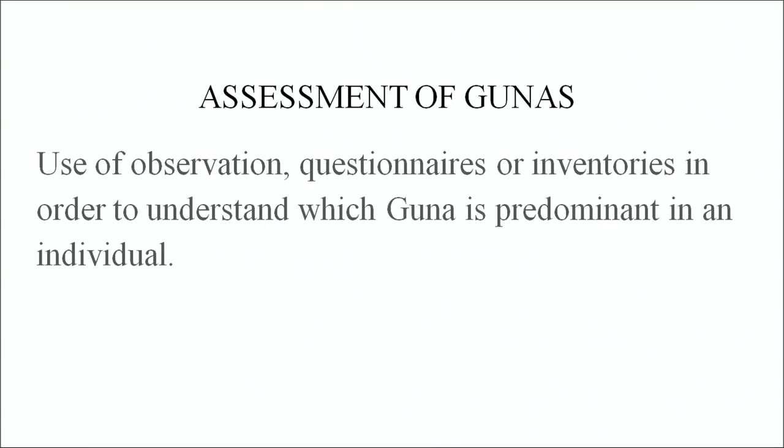In the Indian perspective, we talked about the gunas: rajas, tamas, and sattva. In order to assess these gunas, you can use various methods — observation, questionnaires, or inventories — to understand which guna is predominant in an individual. As discussed, all gunas are in interaction with each other and some may be more predominant than others. To understand this, you might speak to the person, conduct interviews, or use certain questionnaires.